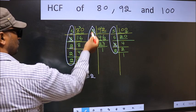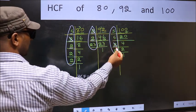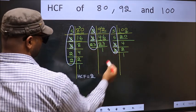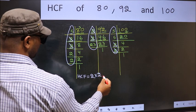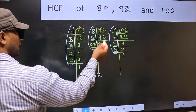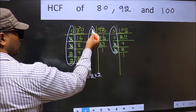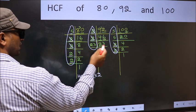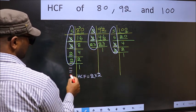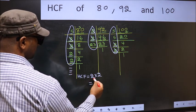Next number 2. Do we have 2 here? No. So no need for us to check in the other place. No more numbers have been left out. So our HCF is 2 into 2, 4 is our HCF.